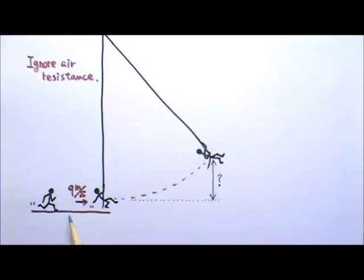Tarzan running at 9 m per second grabs onto a vertically hanging vine and swings up. If air resistance is negligible, how high can he swing up to?